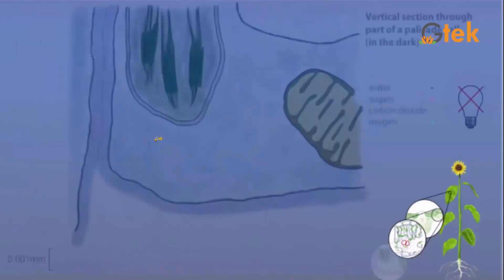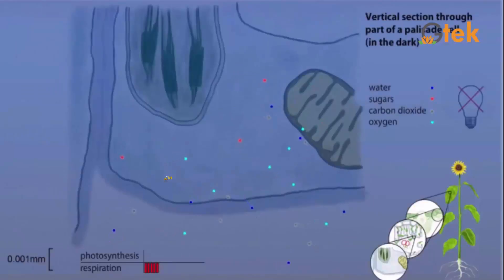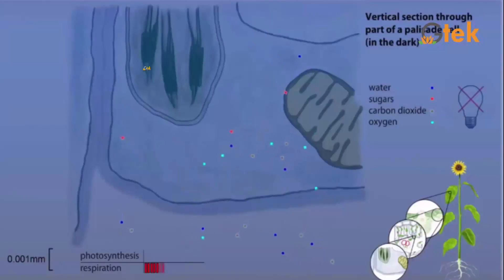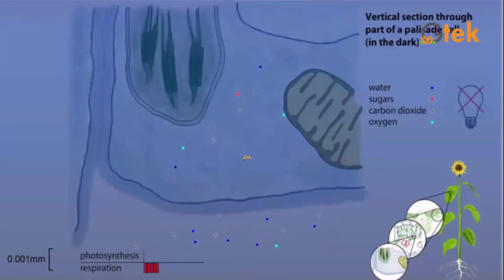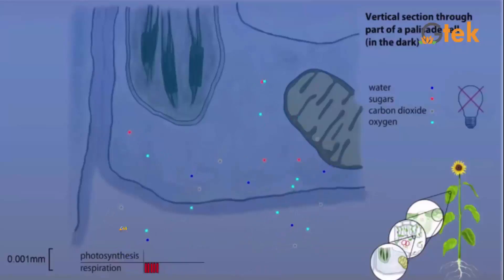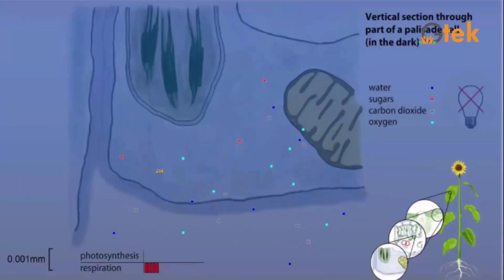Now let us see about the vertical section through part of the palisade cell — that is in the dark section. Here, the respiration process only is carried out, and water, sugars, carbon dioxide, and oxygen are represented here. These four things travel through the vertical section.